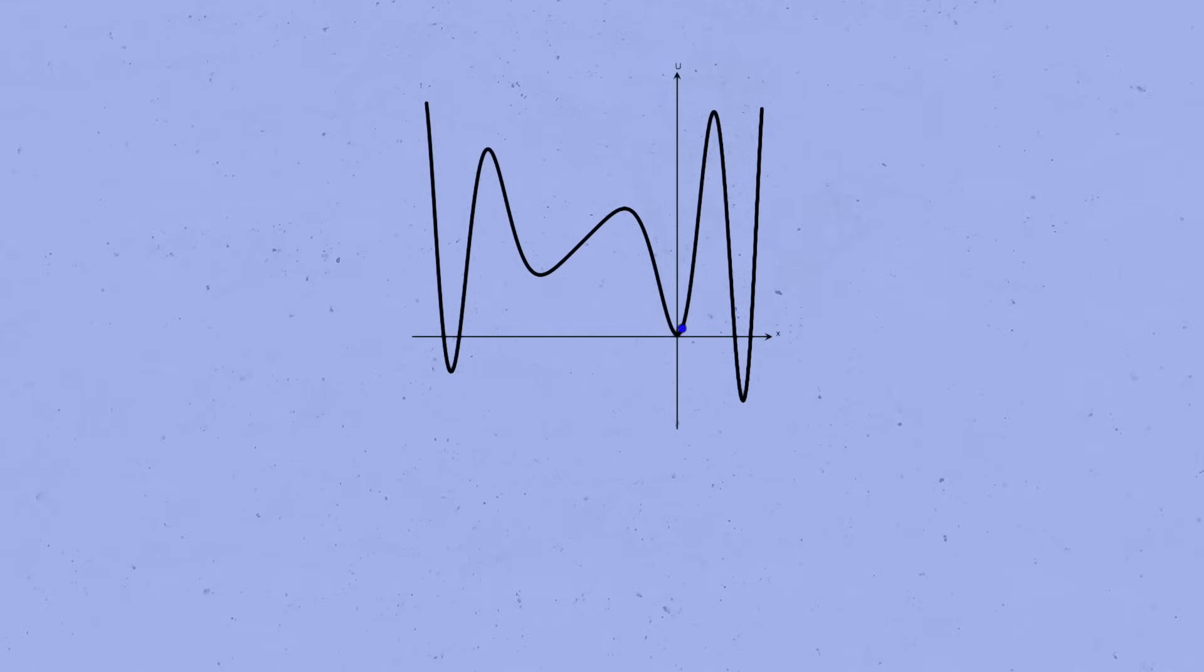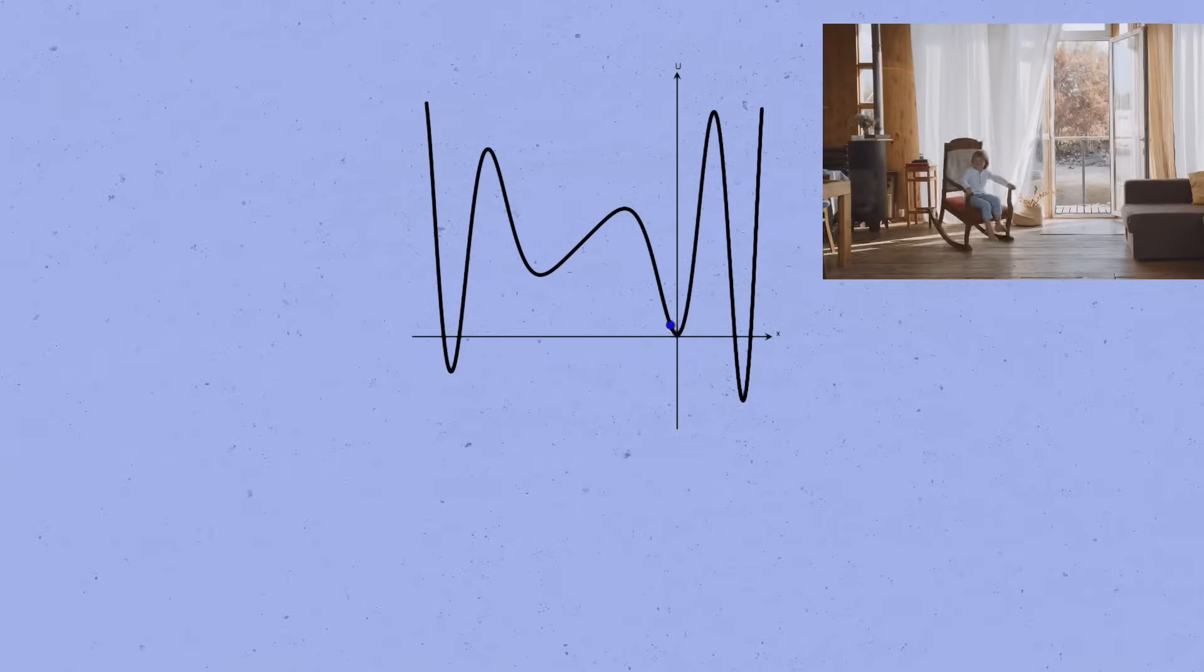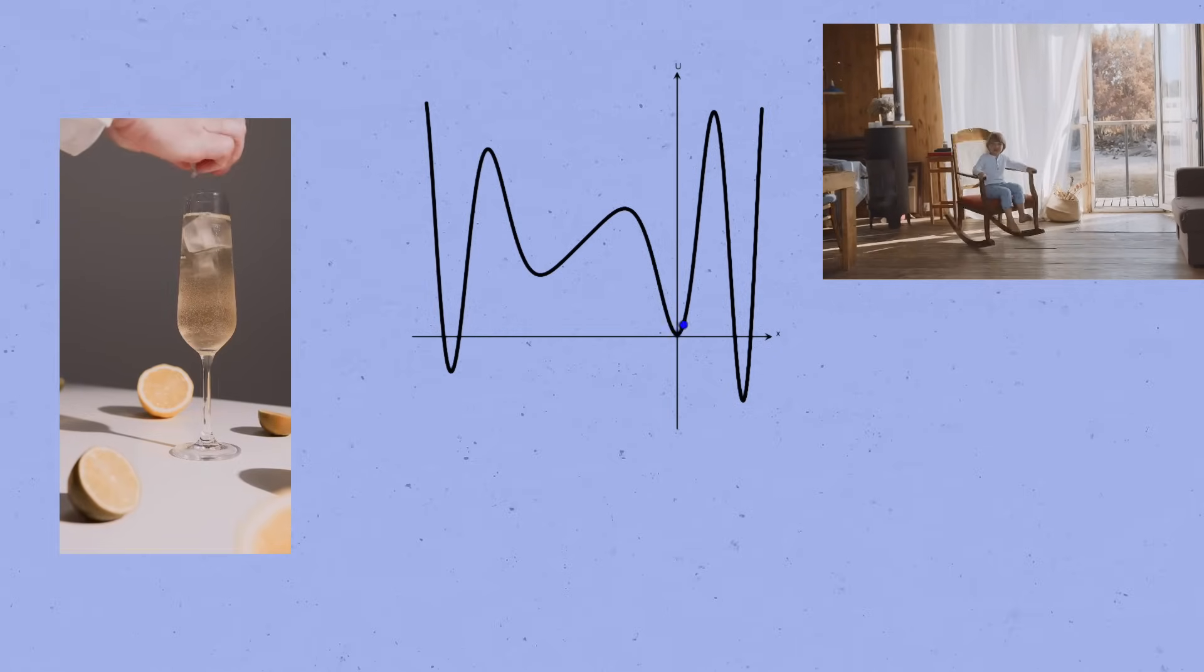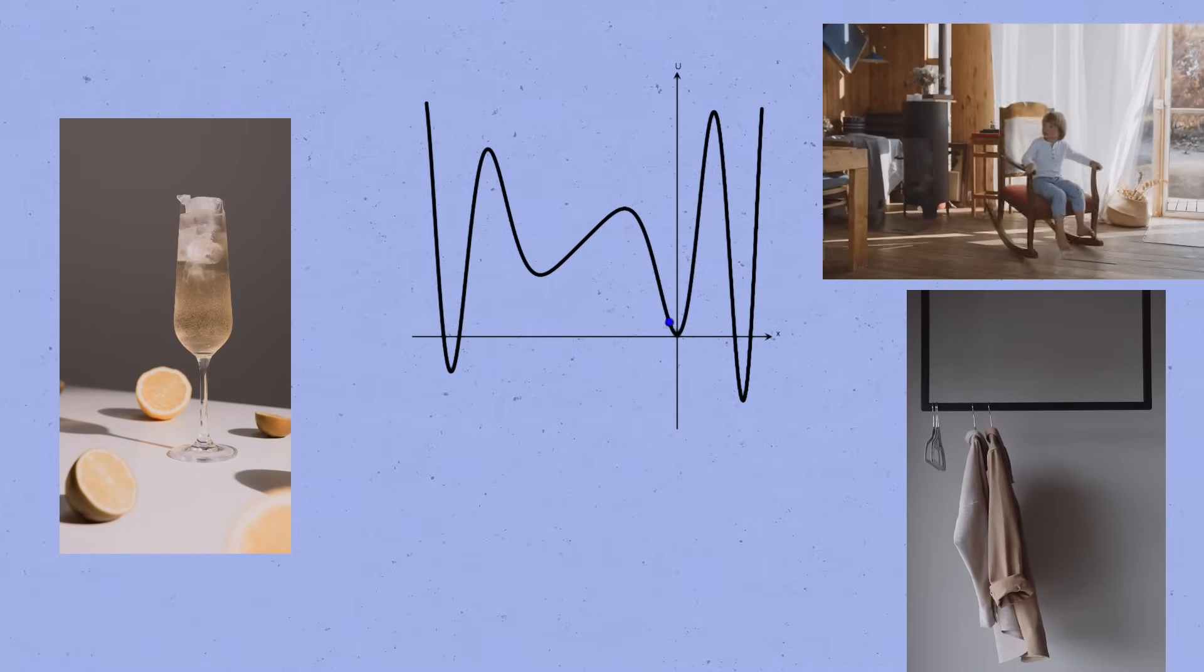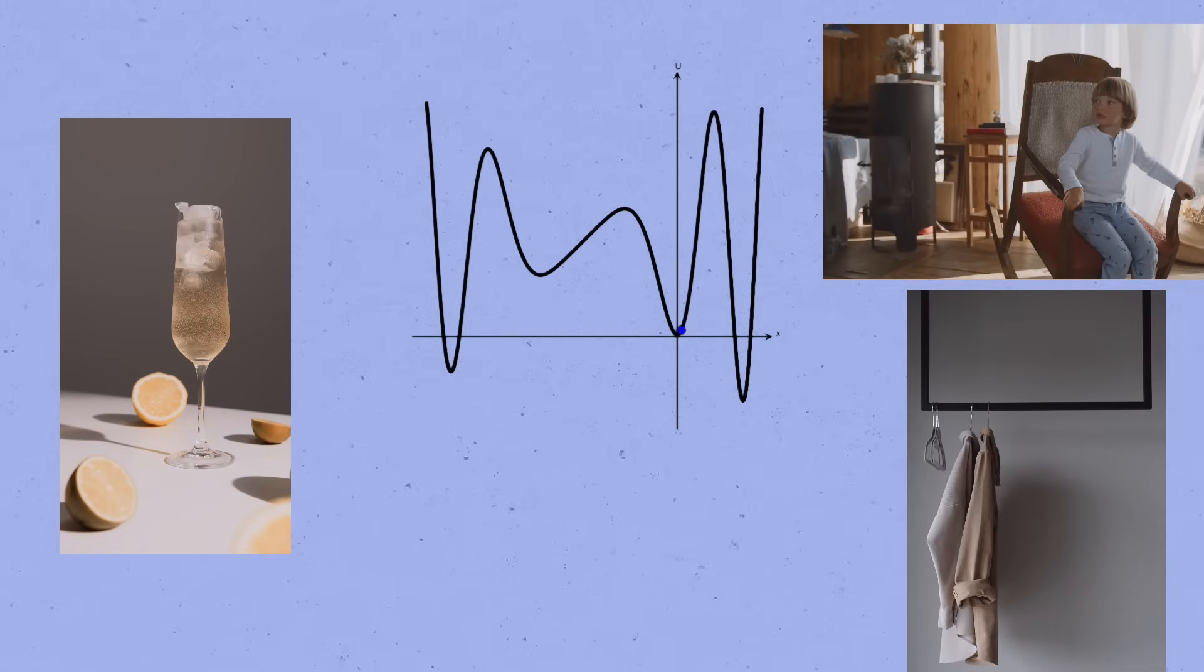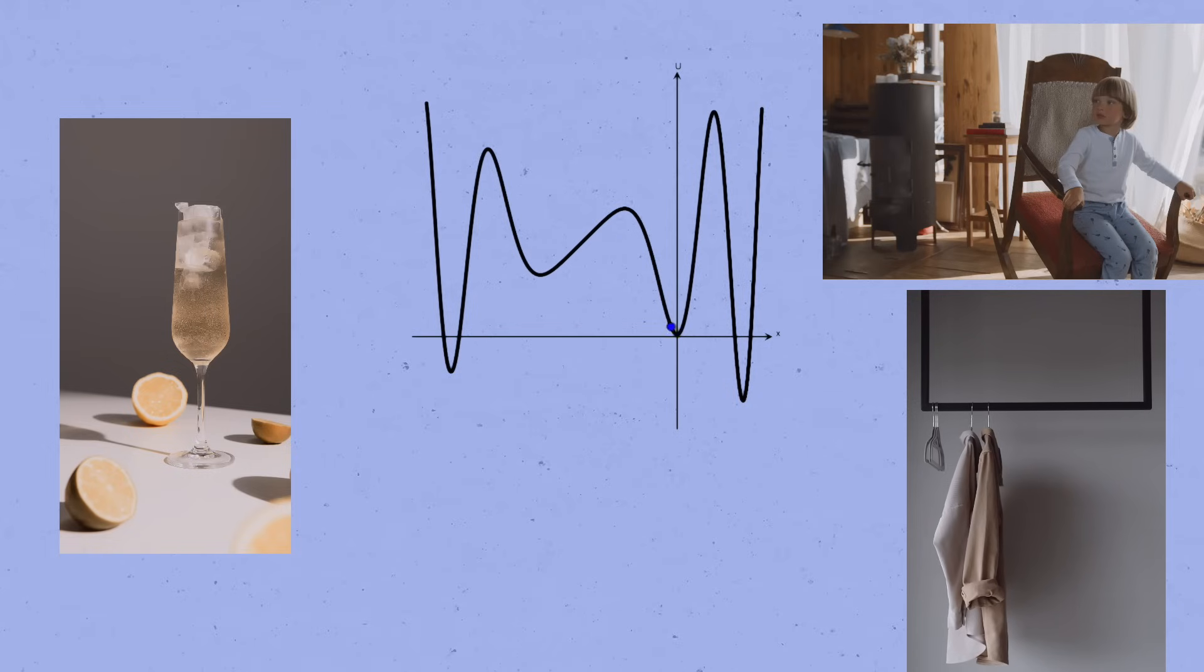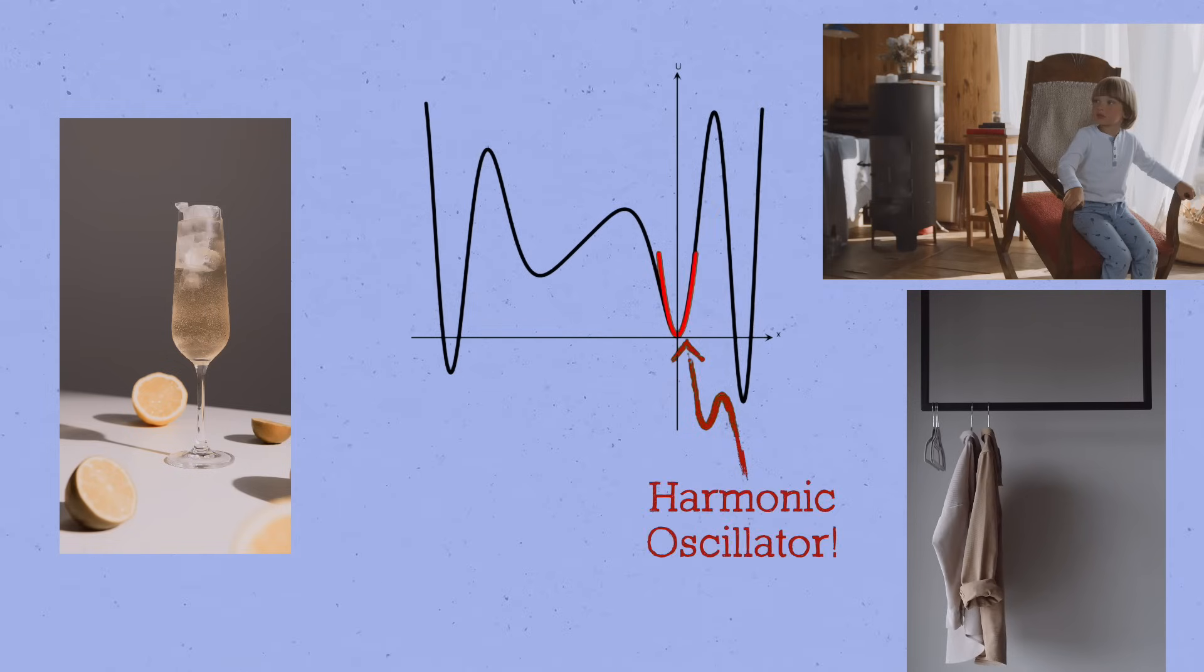You'll see this behavior all the time in your daily life if you pay attention. When you rock gently in a chair, you're oscillating around a stable equilibrium. When you drop an ice cube in a drink, it bobs up and down around its equilibrium height. Your coat hanging on the hook is swaying slightly around its equilibrium axis. And the basic reason is that when you're nearby a stable equilibrium point of almost any potential, the bottom of the hill looks just like the parabola of the simple harmonic oscillator.